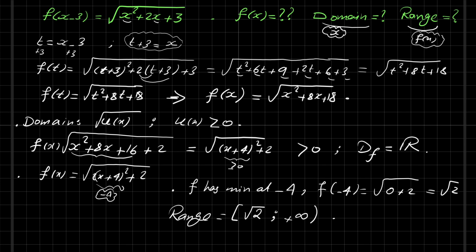So again, f(x) equals square root of x squared plus 8x plus 18. The domain is the set R, and the range is square root of 2 to plus infinity. This is the final answer. If you want to improve your math, just like and subscribe. Thank you for watching.